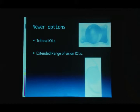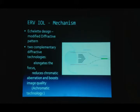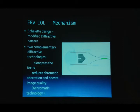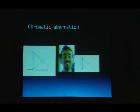Extended range of vision (EDOF) lenses work differently from diffractive designs. The echelon design used here creates multiple foci so close to each other that the whole range becomes one continuous focus of vision. This EDOF technology uses two complementary mechanisms: it elongates the focus, and it minimises chromatic aberration. In chromatic aberration, blue light focuses in front of the retina and red behind, while green focuses on the retina, creating a blur circle on the retina and reducing image quality.